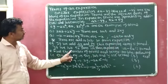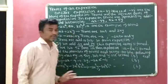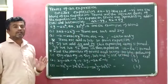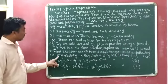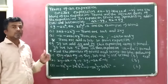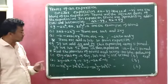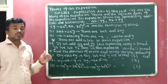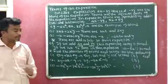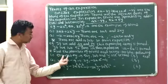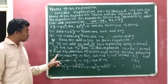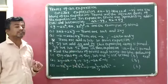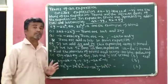Find the number of terms and identify the terms for the following expressions. Question 1: 5xy plus 3ab plus y. Terms are separated by addition and subtraction, so there are three terms. 5xy is the first term, 3ab is the second term, and y is the third term. Number of terms: 3. Terms are 5xy, 3ab, and y.